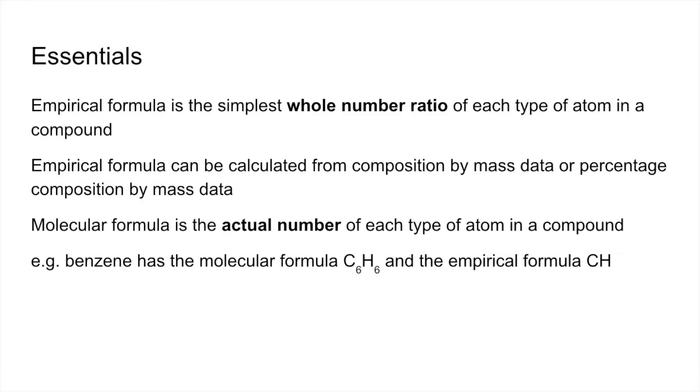So an example there, benzene has the molecular formula C6H6, so it's actually got 6 carbons and 6 hydrogens. But the simplest whole number ratio of each type of atom in a compound is CH.